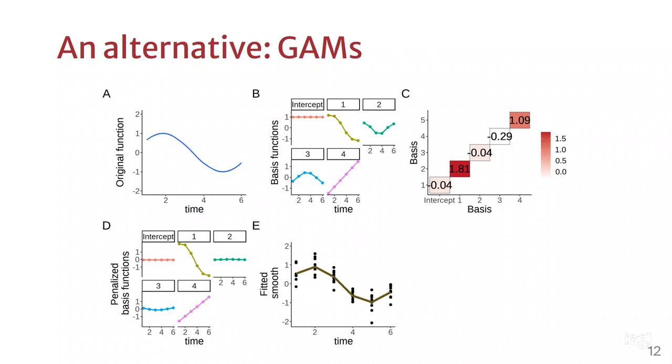You'll see that basis number 2 and basis number 3 are heavily penalized, and because of that, their shapes change significantly. But when all of these basis functions are added, they are going to be able to recreate the trend that the function of panel A has.